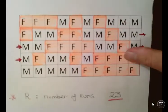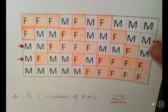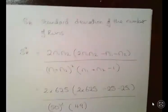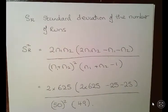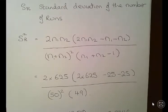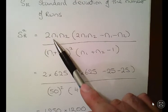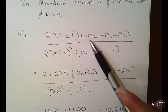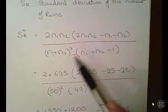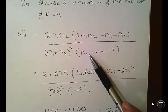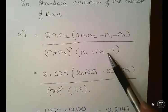So we'll just go on to the next page here. Now we're calculating the standard deviation or the equivalent of the standard deviation. This calculation is a little bit more involved. So what we have here is 2N1N2 times 2N1N2 minus N1 minus N2 over N1 plus N2 squared times N1 plus N2 minus 1.